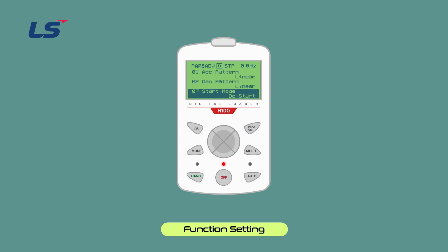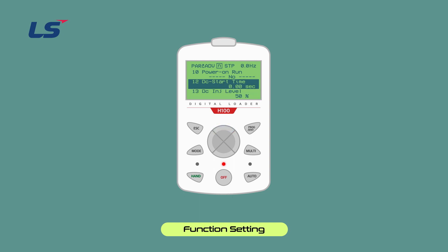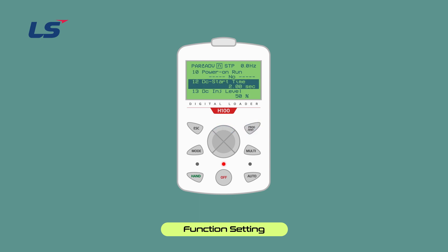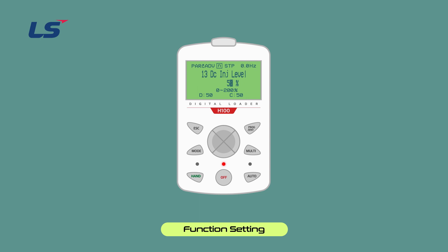When DC start is set, ADV12 DC start time and ADV13 DC injection level are activated. At ADV12 DC start time, press the Enter key and set the time using the direction keys. At ADV13 DC injection level, press the Enter key to set the DC input amount. Set the level using the direction keys and then press the Enter key to complete the setting. The direct current application amount can be set from 0 to 200% depending on the machine status.